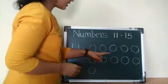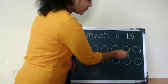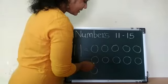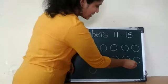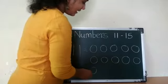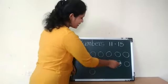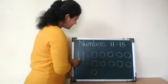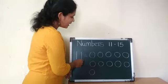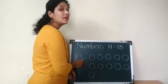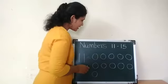Count these circles. 1, 2, 3, 4, 5, 6, 7, 8, 9, 10, 11. There are 11 circles. And this is number 11. 1, 1, 11. Say with me: 1, 1, 11. Okay children.